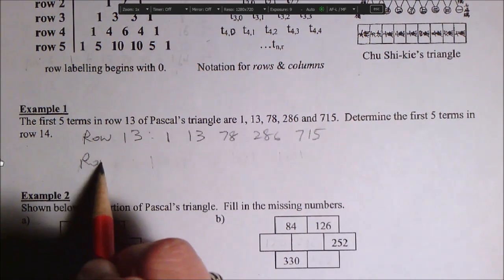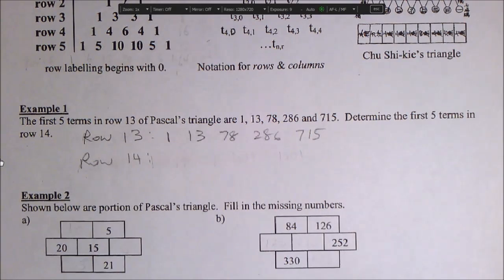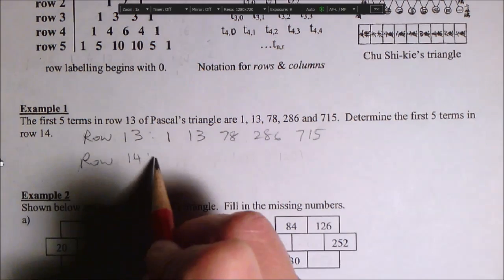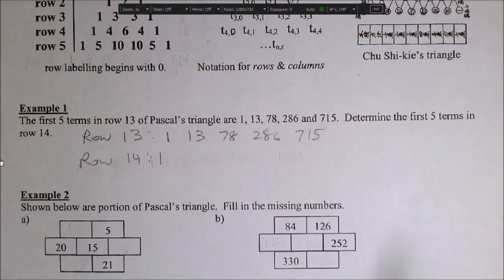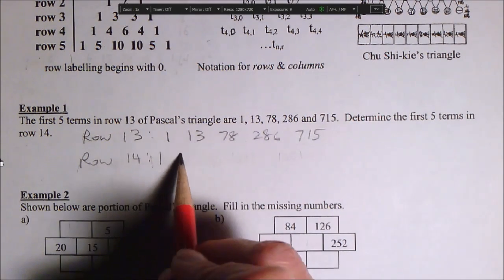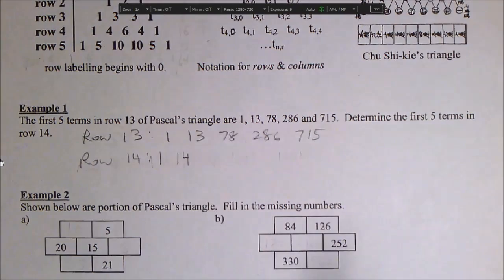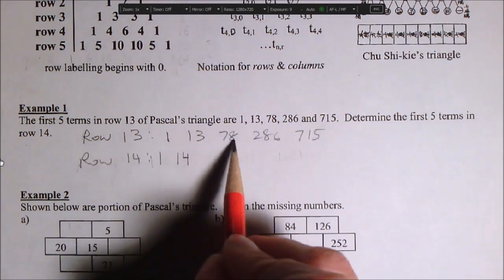So what's row 14? Okay, well, remember the patterns. Row 14 sits right below row 13. Every row starts with a 1. And so now we have to add these two. You get 14.